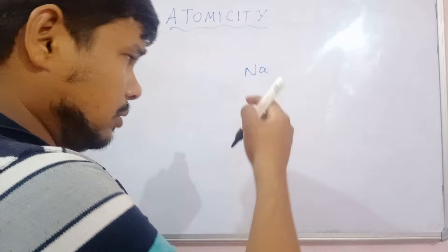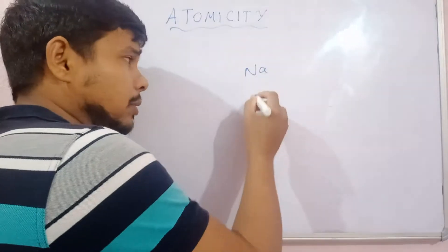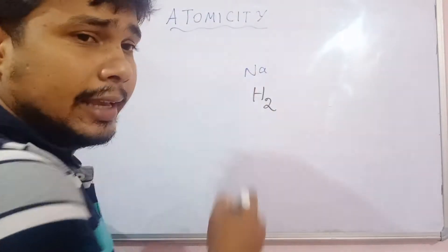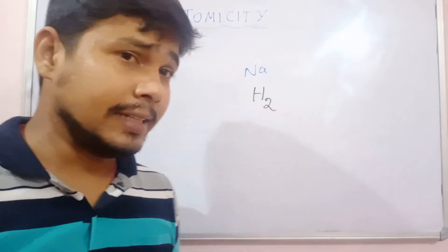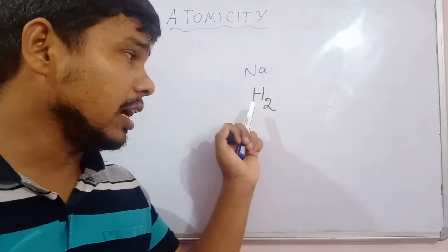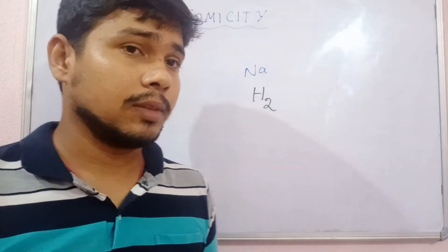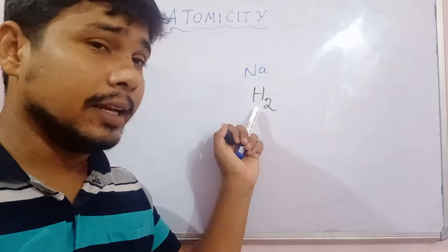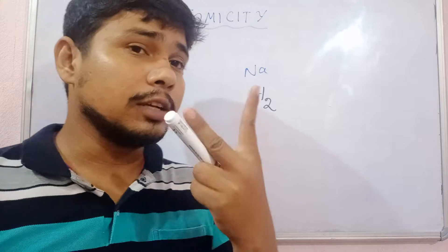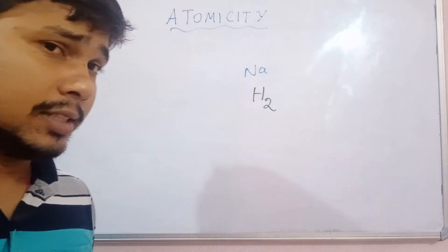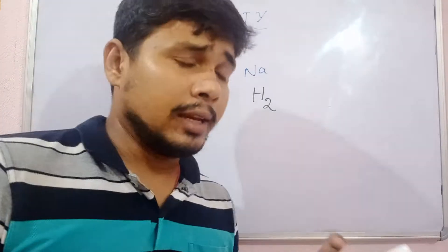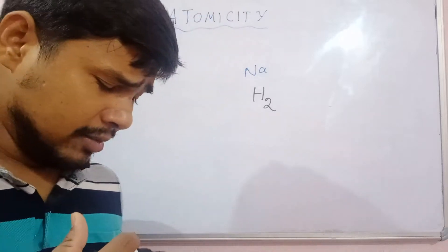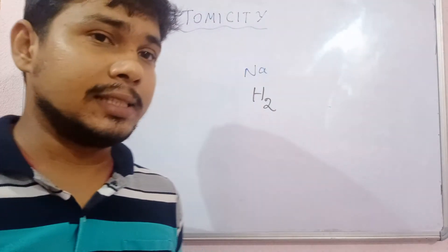Let me explain with another example. H2. That means here the atomicity is 2. In this element, two atoms are present. That's why its atomicity is 2. In this way, you can explain different examples of atomicity.